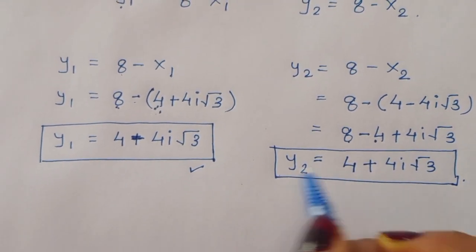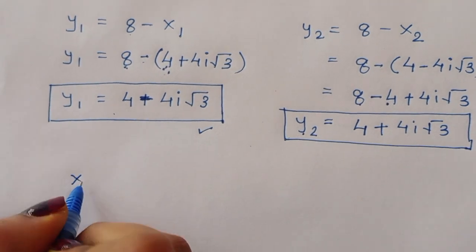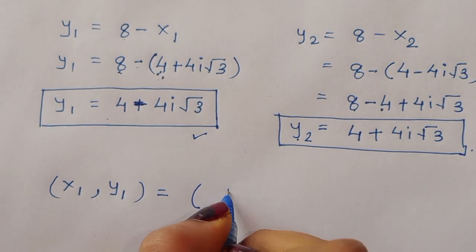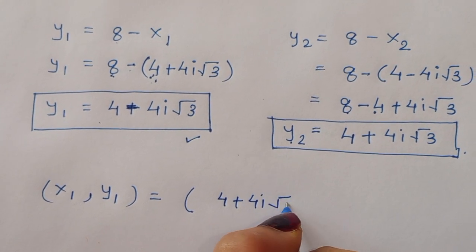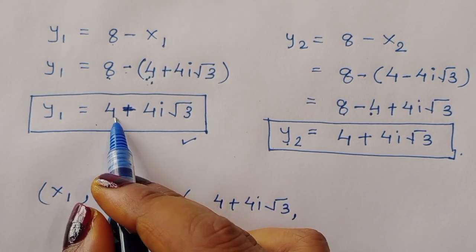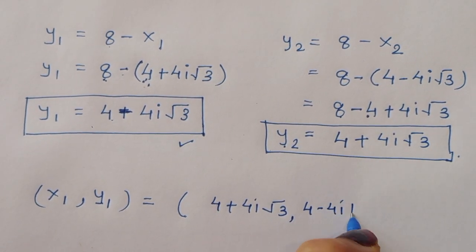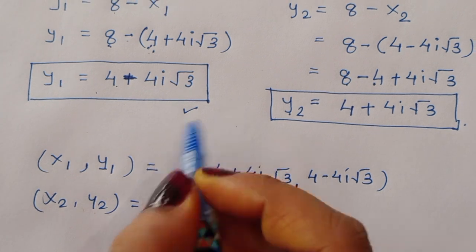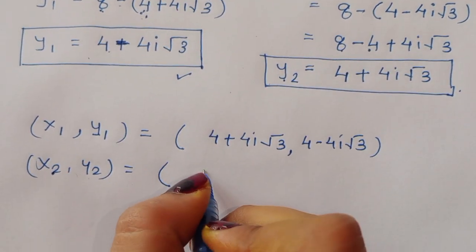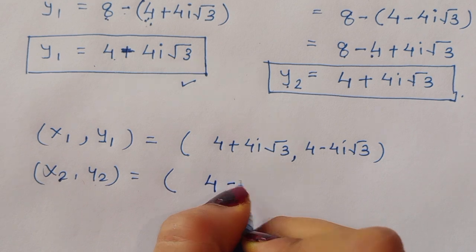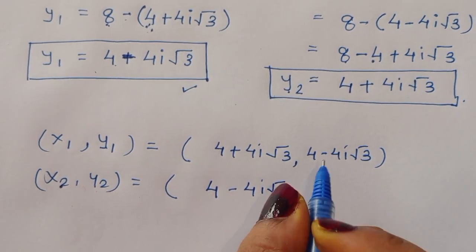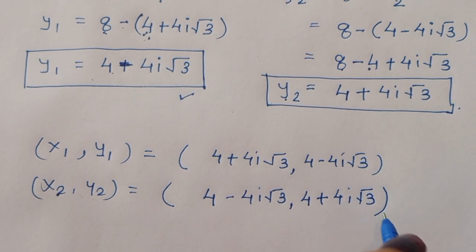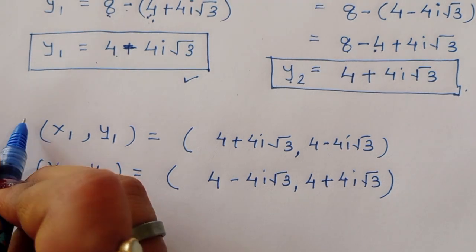We now have both solution pairs. The solution is: when x1 is equal to 4 plus 4i square root of 3, the corresponding y1 is equal to 4 minus 4i square root of 3. And when x2 is equal to 4 minus 4i square root of 3, the corresponding y2 is equal to 4 plus 4i square root of 3. This is the complete solution.